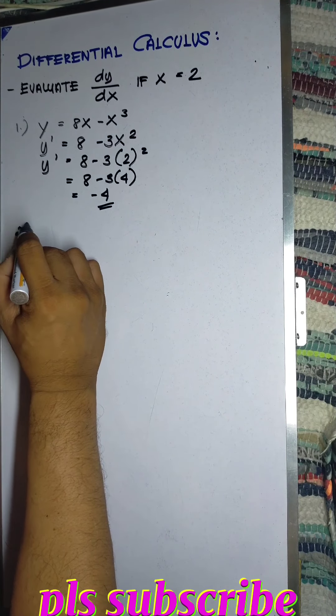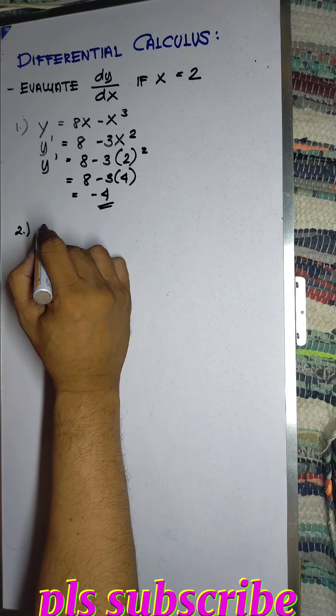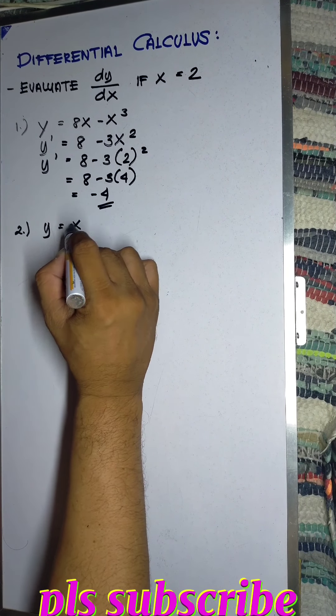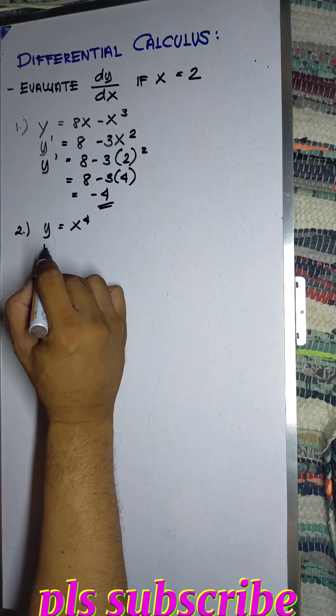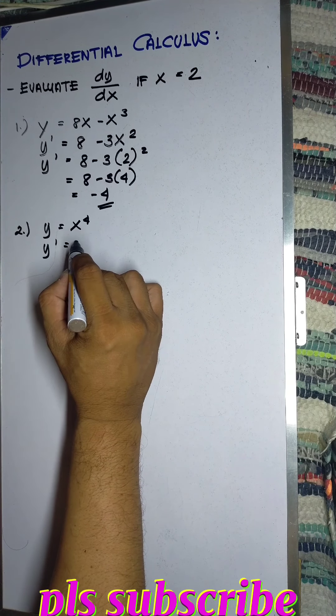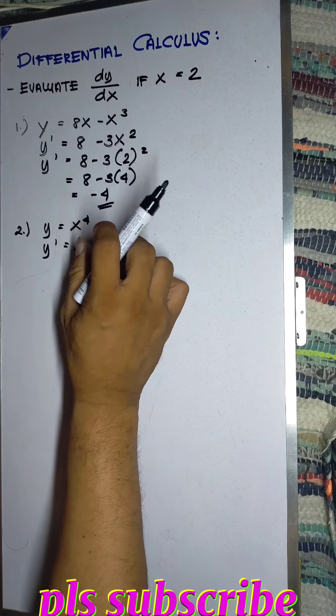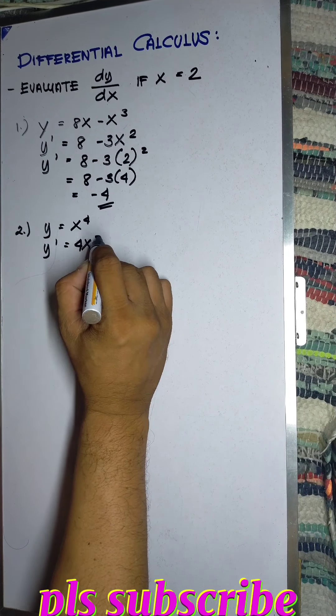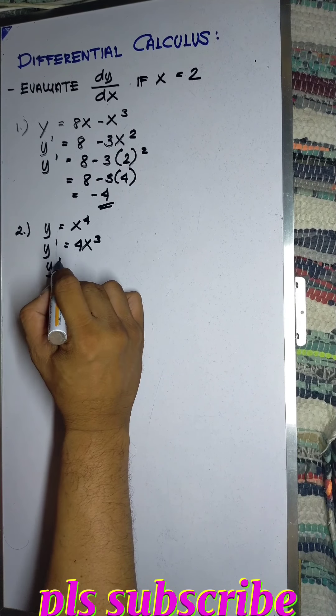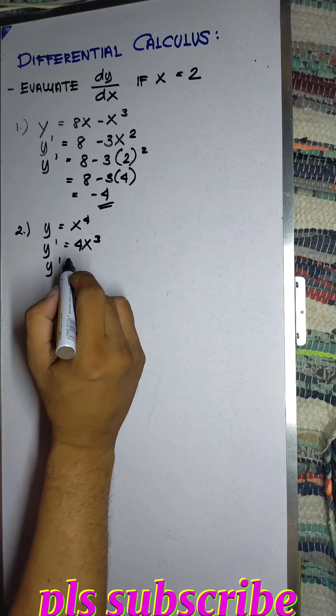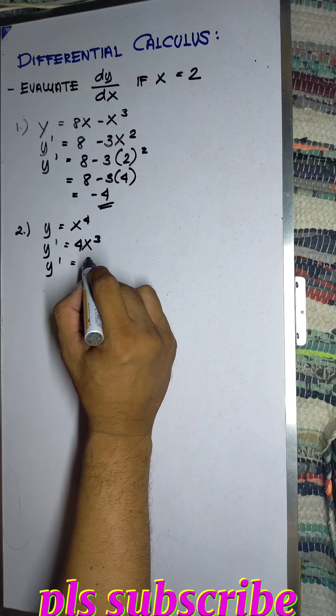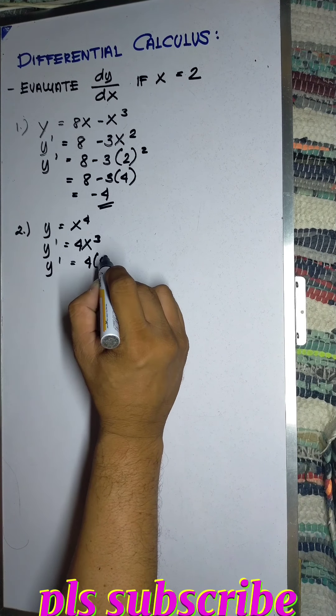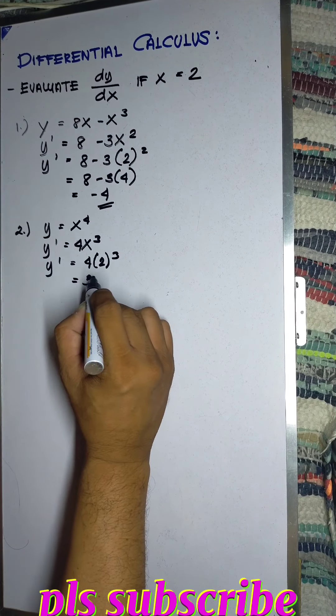For number 2, y equals x to the fourth power. So the derivative y prime will be 4x cubed. Substitute the value x equals 2. That will be 4 times 2 cubed, so that will be 32.